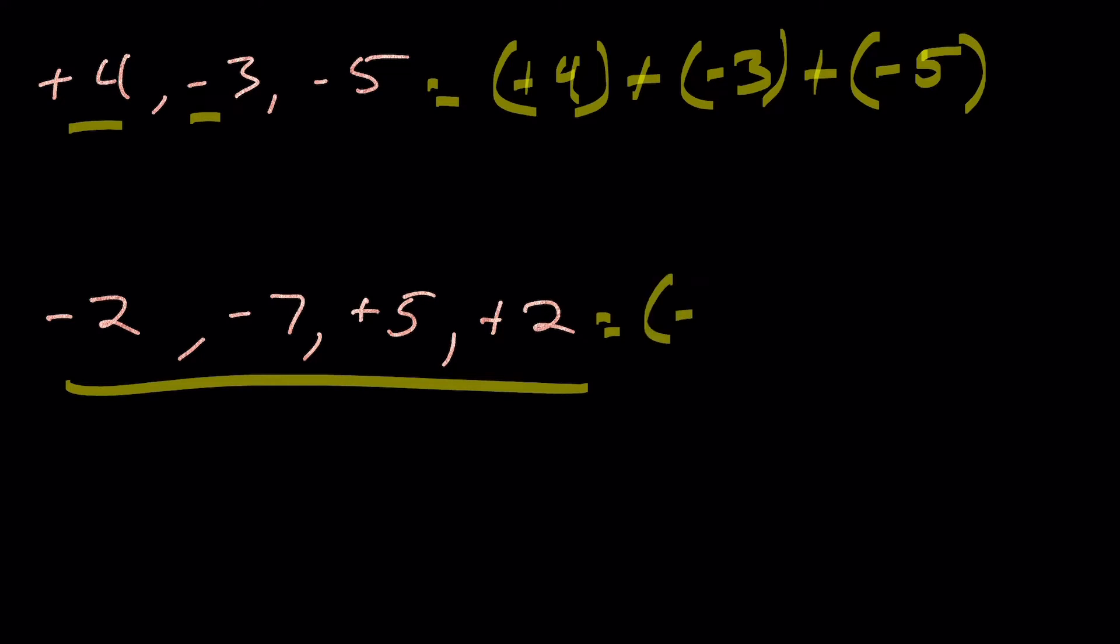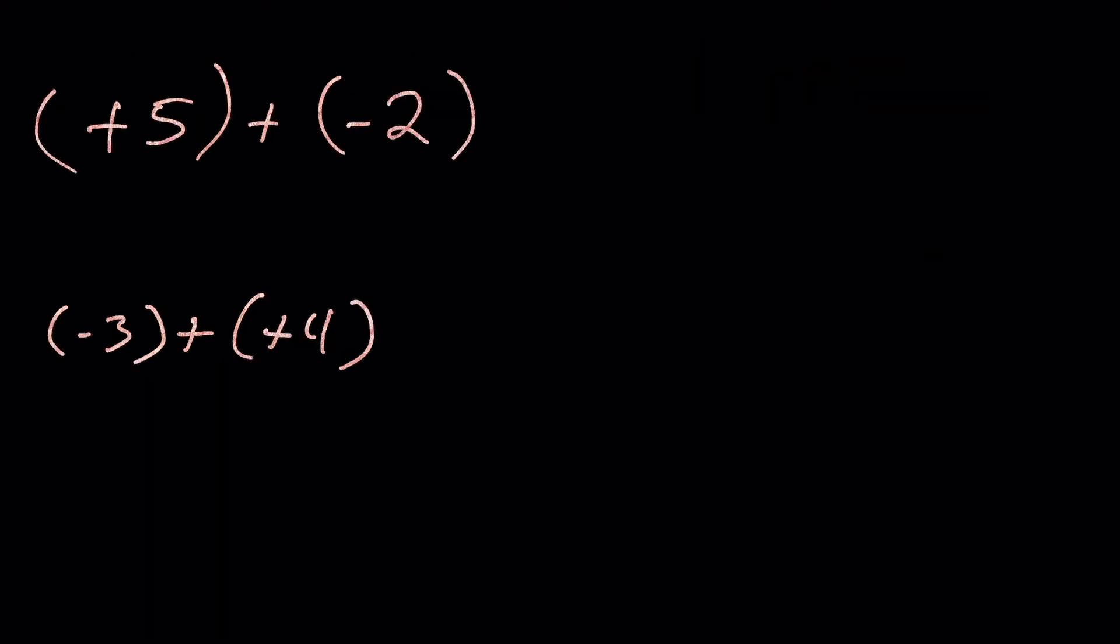Okay, so now when we have them in our string, we can just add them together. What happens here when I have a plus beside a negative number? So if I look at that on the number line.